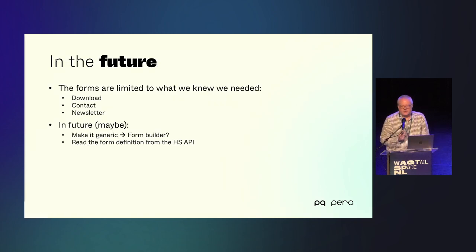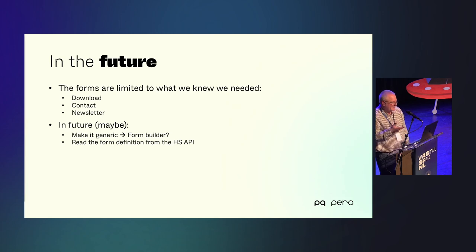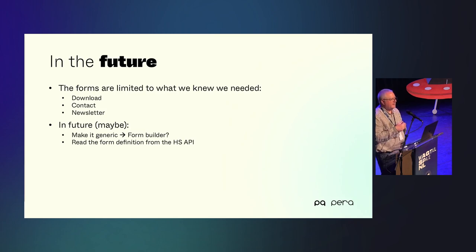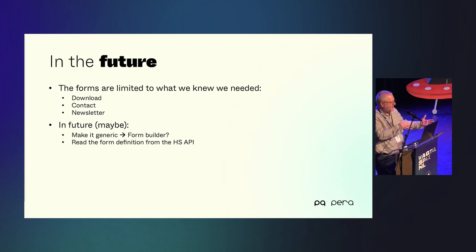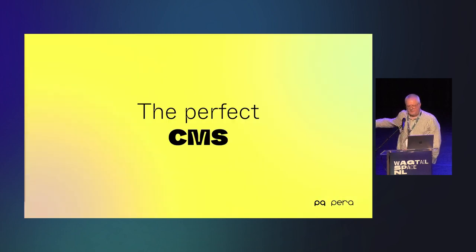It basically works and we're live. We just built the forms we need, so they're kind of hard-coded — download forms or contact forms. In the future we could make it generic: you can actually read from the HubSpot API a JSON structure describing how a form is configured, and we could write something to render that properly on the front and back end. Right now it's predefined. That's my bit — over to Joost.